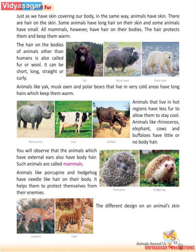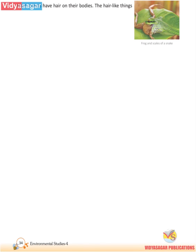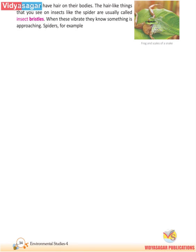Animals like porcupine and hedgehog have needle-like hair on their body. It helps them to protect themselves from their enemies. The different designs on an animal's skin are due to the presence of different colored hair. Most insects have hair on their bodies. The hair-like things on insects like the spider are called bristles. When these bristles vibrate, they know something is approaching.